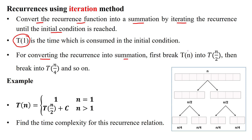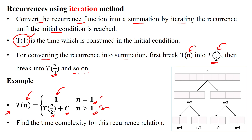For converting the recurrence equation into a summation, we will break the given problem with size n into n/2, then n/2 will be broken into n/4, n/4 into n/8, n/8 into n/16, and so on, until reaching T of 1. The example given here assumes time complexity with respect to input size n. When n equals 1, it consumes only 1 unit of time. If n is greater than 1, it will take T(n/2) plus c number of steps.